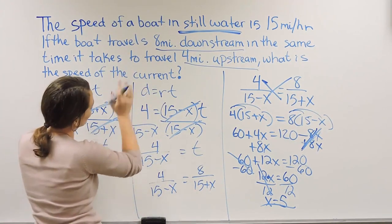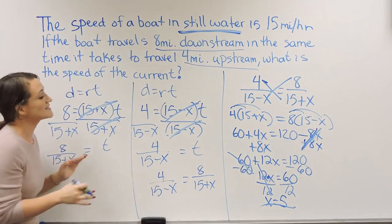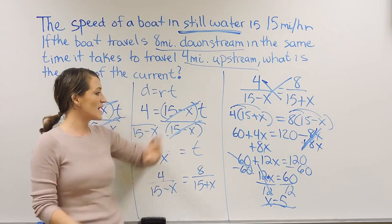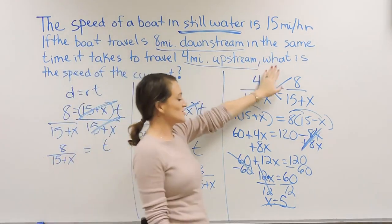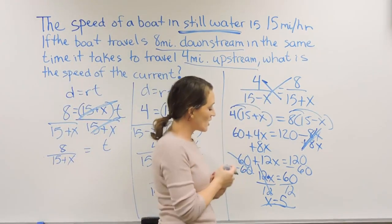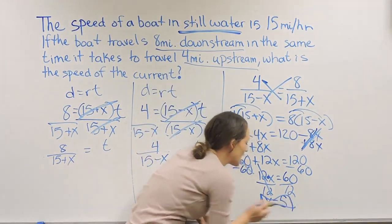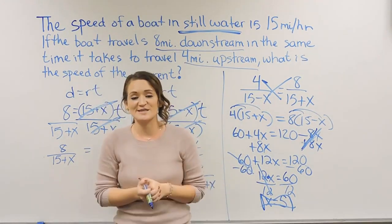But otherwise here, so again, we need to plug in for the distance formula twice so that we can solve each one of these for T so that we can then create our big equation over here that we can solve in order to find that current. So here, X is 5, so the current is 5 miles per hour. Here we go.